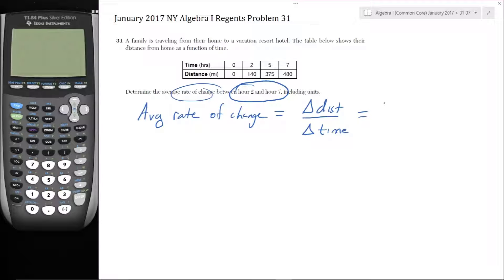But distance is 480. So this is the final and initial. So D final minus D initial divided by T final minus T initial.